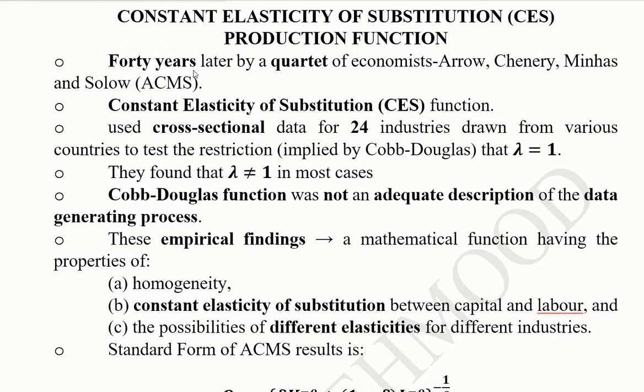It was introduced approximately 40 years after the Cobb-Douglas production function by a quartet of economists and mathematicians: Arrow, a well-known mathematical economist; Chenery; Minhas; and Solow, a Nobel laureate in economics.